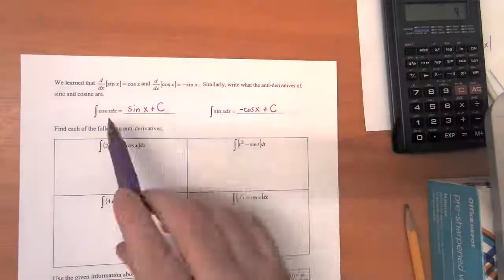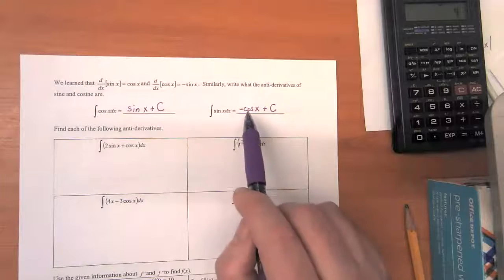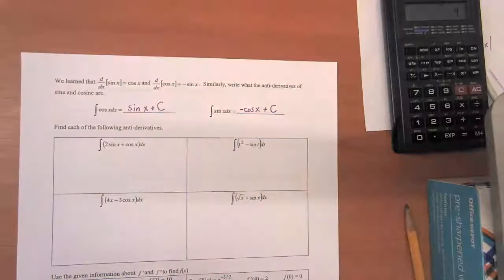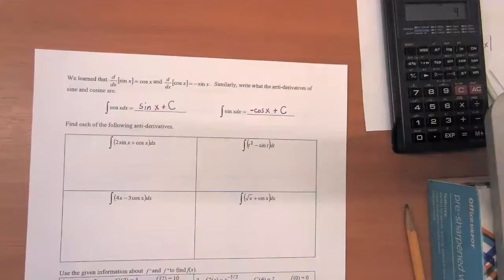Once again, if you have trouble with the antiderivatives, just kind of take a guess and then try taking the derivative of your guess and double check to make sure that it's right. So let's go through a couple of these examples here.